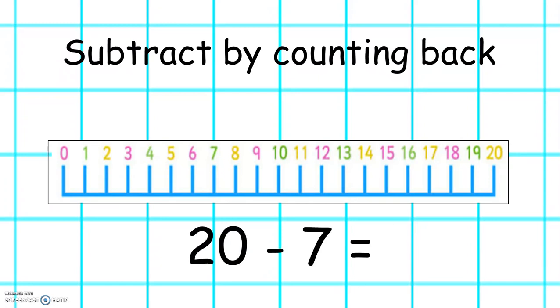Let's try this one. 20 subtract 7. We start on 20 and we count back 7.